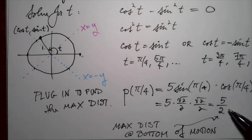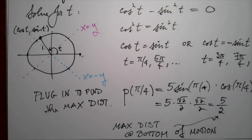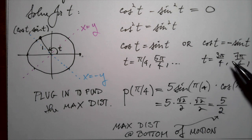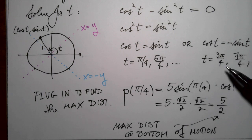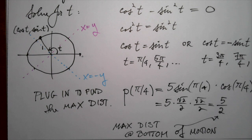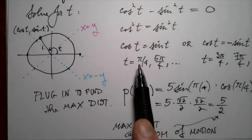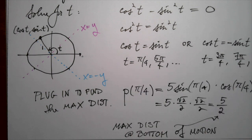That's the maximum distance — where the spring is at the bottom of its range of motion, the farthest away we get from equilibrium. If we had plugged in 3 pi over 4, we'd end up with minus 5 over 2. That's when we're at the top of the range of motion with the spring all scrunched up — same distance from equilibrium, just in the opposite direction.